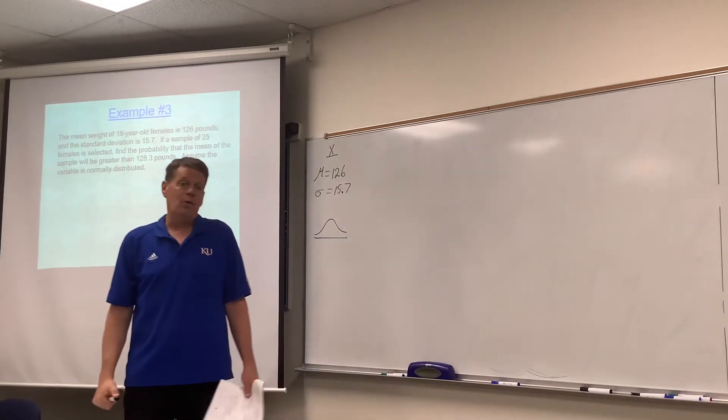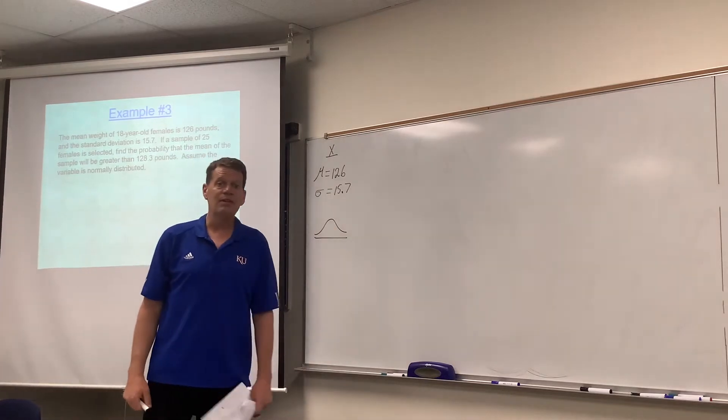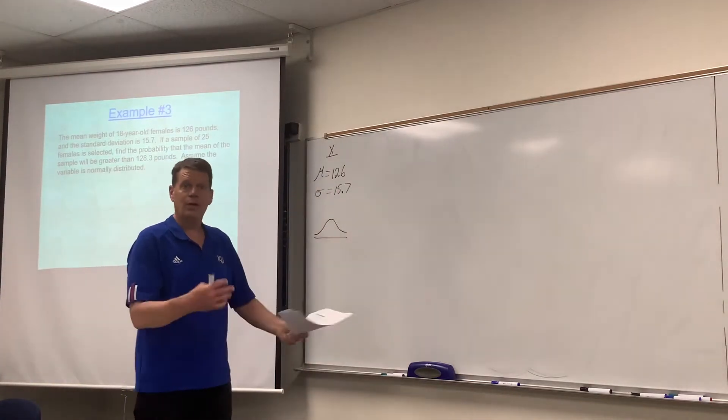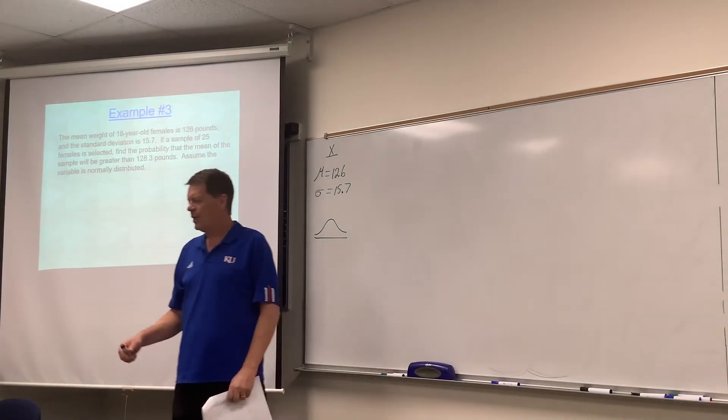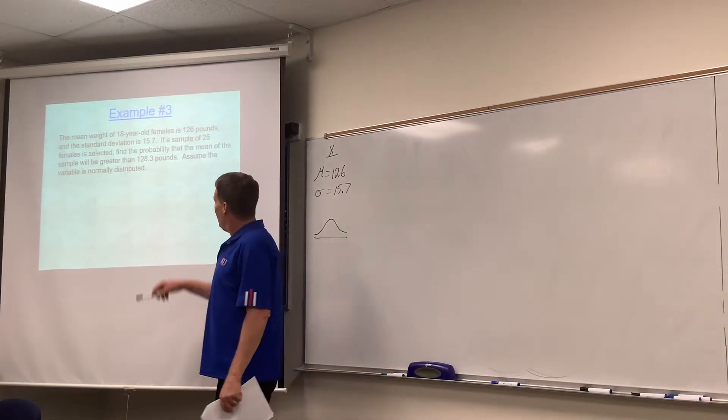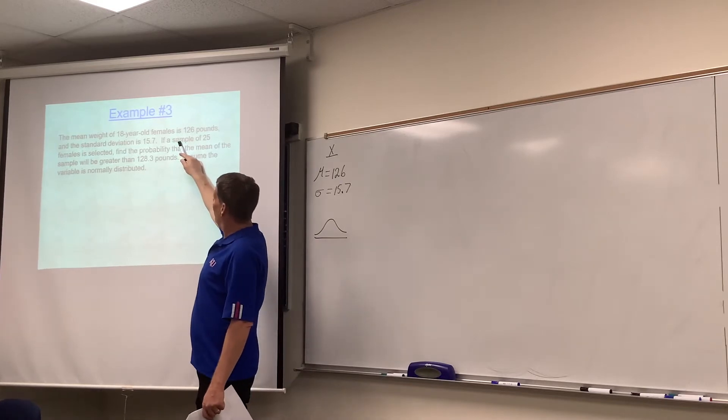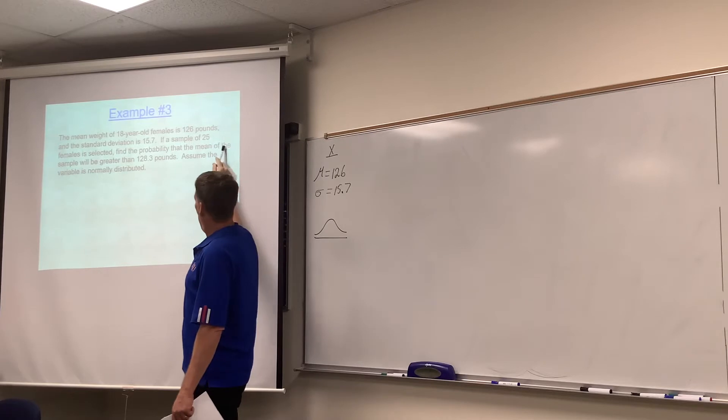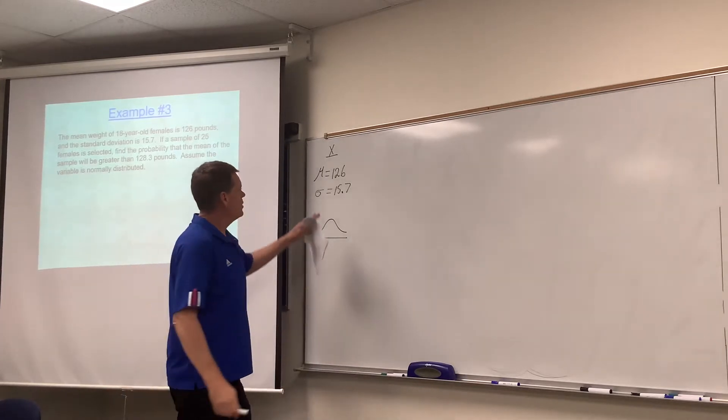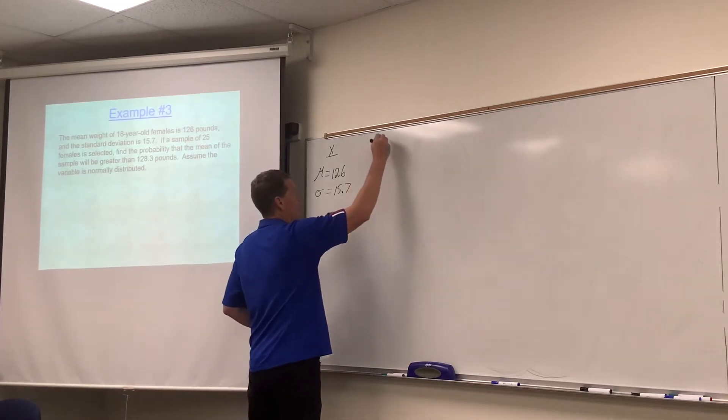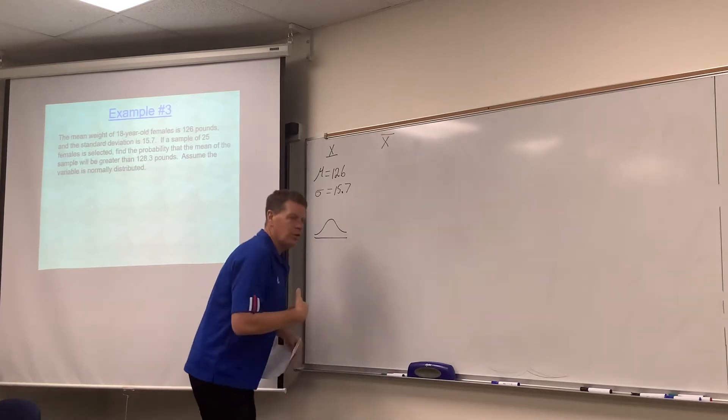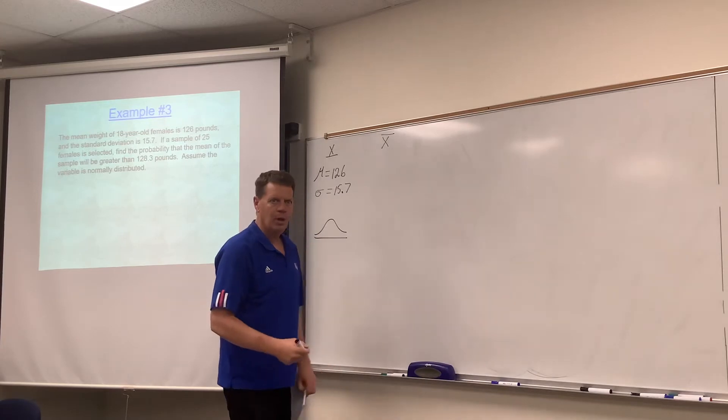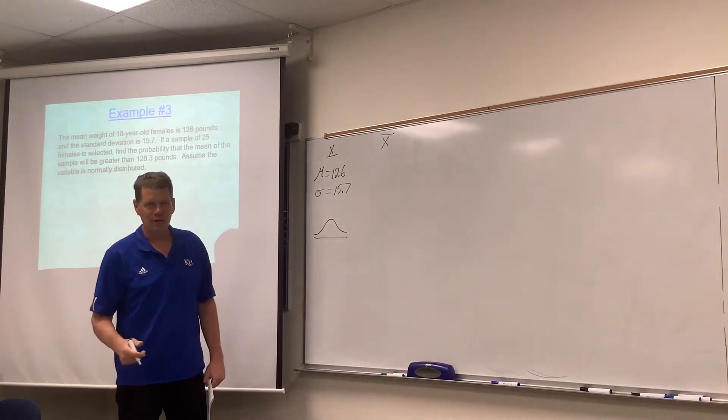So this might be a question like we did on assignment 17, where we just have a normally distributed variable. But here's where the key words come into play. If a sample of 25 is selected, find the probability that the mean of the sample, the symbol for the mean of a sample is X bar. We're jumping over to a different variable, the mean of a sample. And that's really important to notice here.